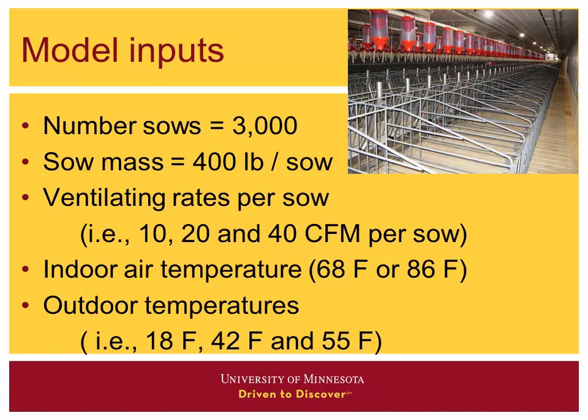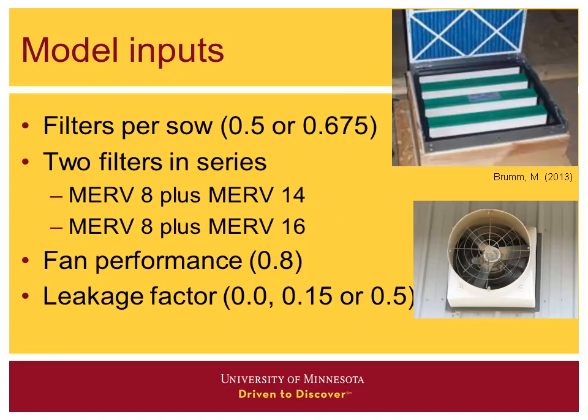We used a 3,000-sow barn because that's one of the data sets we had. We assumed 400 pounds per sow. Ventilating rates of 10, 20, and 40 CFM per sow. Interior temperatures of either 68 or 86°F, corresponding to outside temperatures of 18, 42, and 55°F. Filters per sow from industry input: half a square foot, or half a filter per sow, or 0.675. We had two filter series: MERV 8 plus MERV 14, and MERV 8 plus MERV 16.